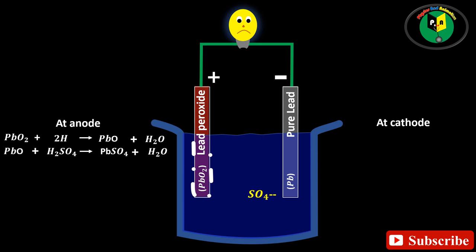The each sulfate ion moves toward the lead plate and reaching there gives up two electrons and become radical sulfate. As the radical sulfate cannot exist alone, it attacks the metallic lead and forms lead sulfate, whitest in color.